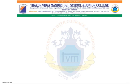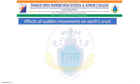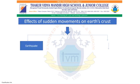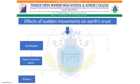We have seen the effects of slow earth movements on the earth's surface. Now let us see the effects of sudden movements on earth's crust. These sudden movements give rise to earthquakes and volcanoes. Earthquake — earth means the ground and quake means trembling of the ground — so an earthquake is the movement of the earth's crust. Different types of waves are generated during an earthquake, called seismic waves: primary waves, secondary waves, and surface waves.